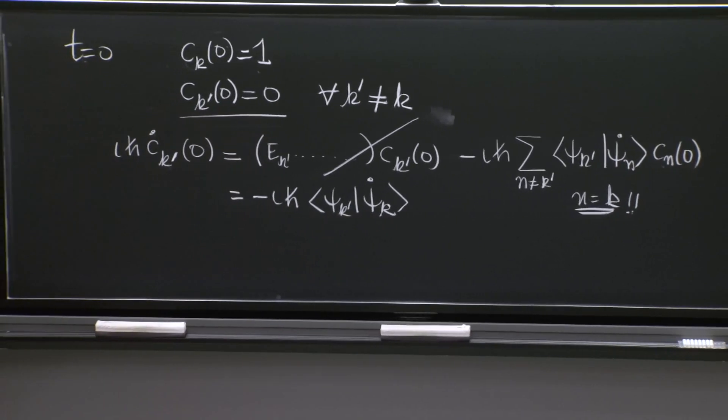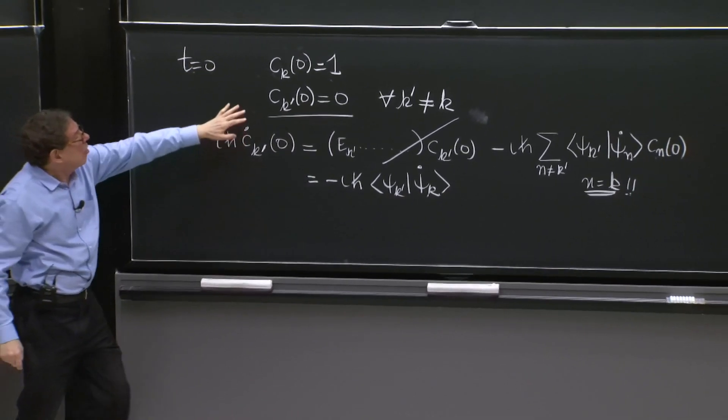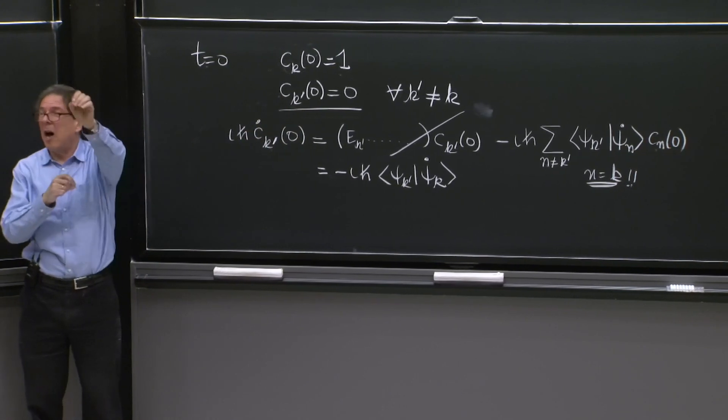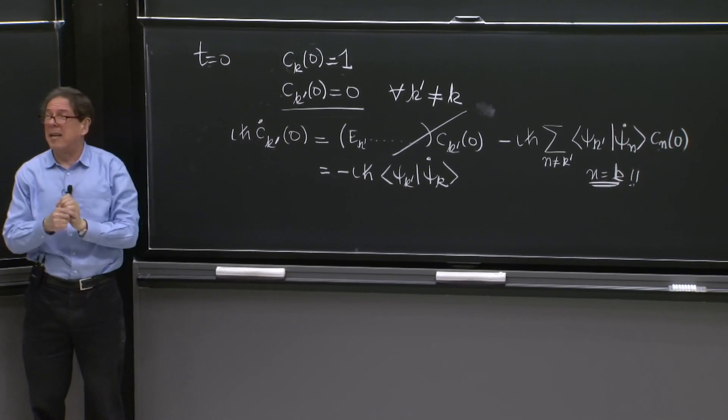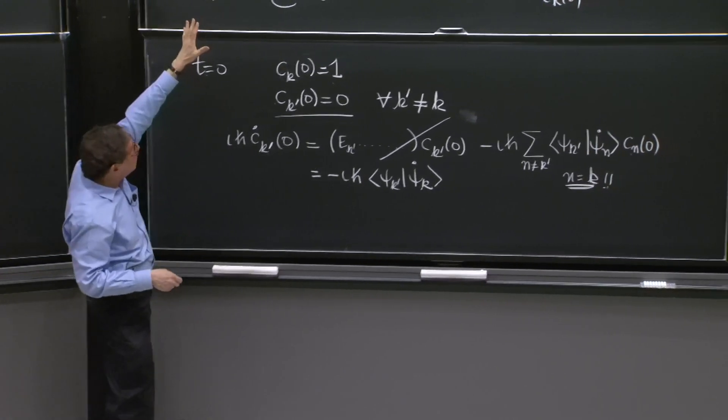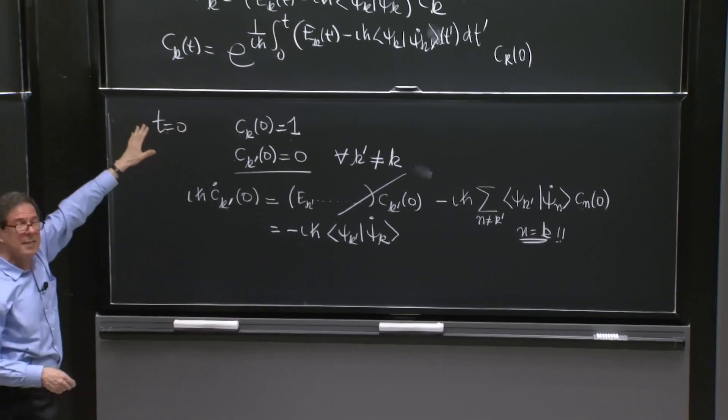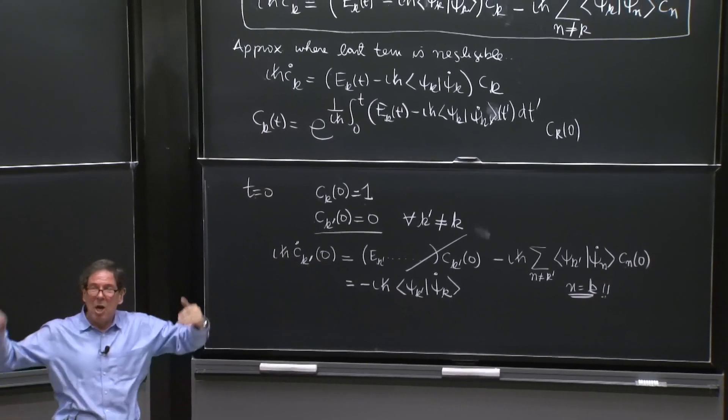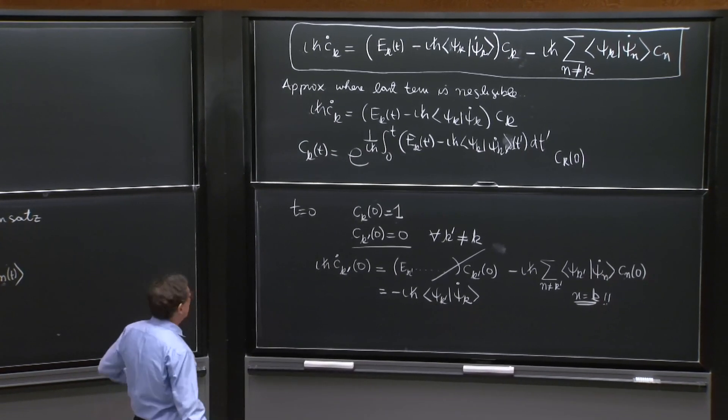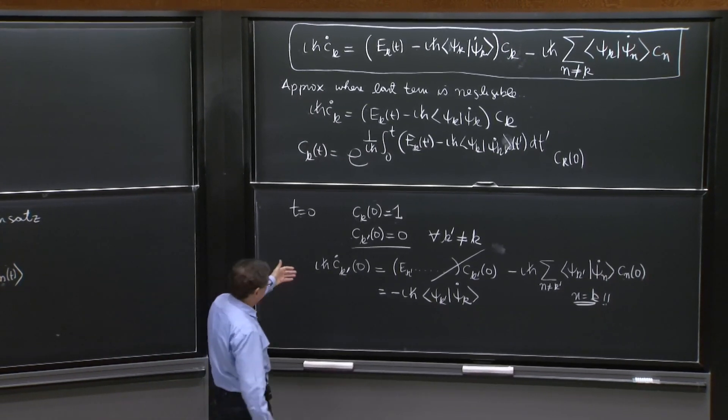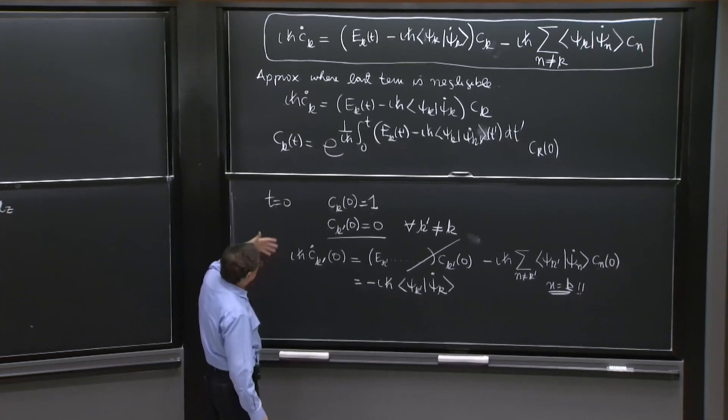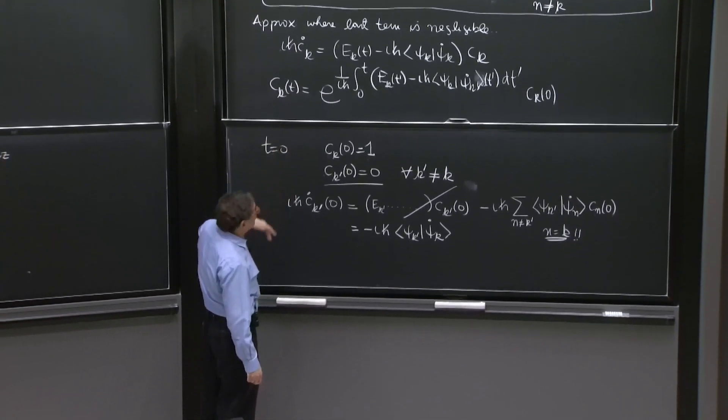So immediately at time equals 0, the other coefficients start changing. You start populating the other instantaneous energy eigenstates. So there's real mixing in this top thing that says it's not rigorous to claim that you stay in that energy eigenstate. It starts to couple, and if it starts to couple, then eventually you make transitions.